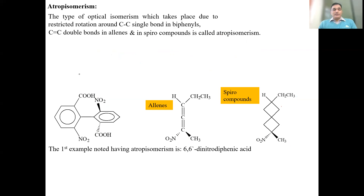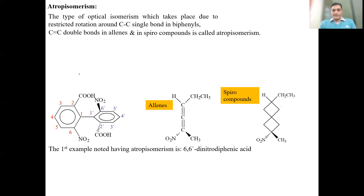Before that, one more thing: atropisomerism was first studied in which compound? The first example noted as having atropisomerism is 6,6'-dinitrodiphenic acid. If we had not put NO2 groups in the biphenyls, the first example was diphenic acid. Numbering the rings: position 6 of the first ring has nitro, and position 6' of the second ring also has nitro — so that compound is 6,6'-dinitrodiphenic acid. This was the first compound in which the atropisomerism property was studied.